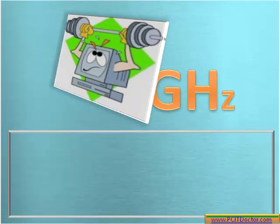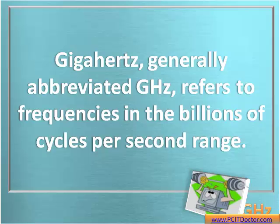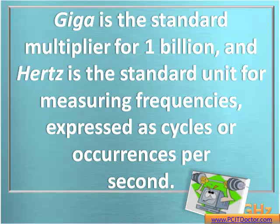So this question is: what is gigahertz and how relevant is it to me buying a PC? First of all, gigahertz, generally abbreviated capital G, H, and then lowercase z, refers to frequencies in the billions of cycles per second range. Giga is the standard multiplier for 1 billion, and hertz is the standard unit for measuring frequencies expressed as cycles or occurrences per second.